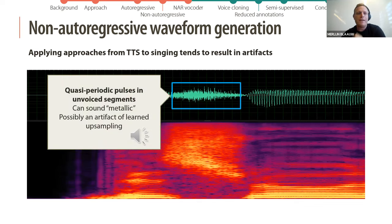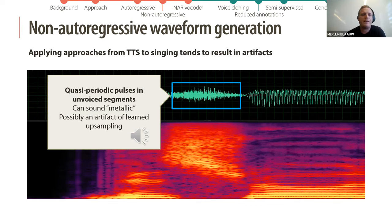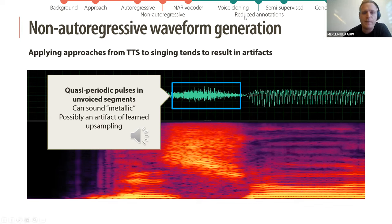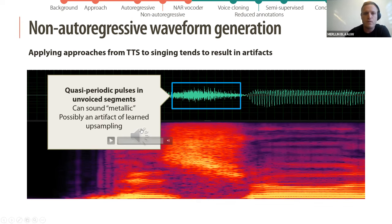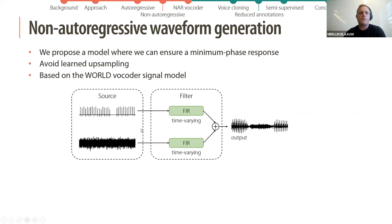Finally, one artifact is quasi-periodic pulses in unvoiced segments that can sound metallic. This might be related to artifacts of learned upsampling. [Brief audio example plays.] We propose a model where we can ensure minimum phase and avoid any learned upsampling.